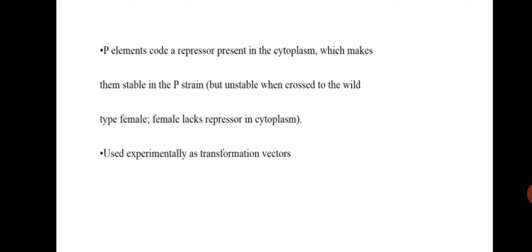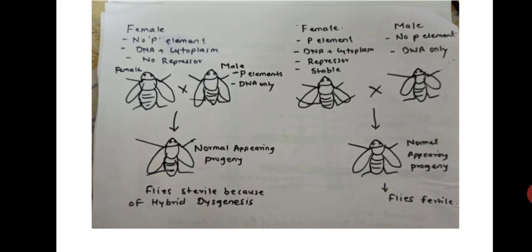P elements encode a repressor present in the cytoplasm, which makes them stable in P strain but unstable when crossed to a wild type female, as the female lacks repressor in the cytoplasm. P elements are used experimentally as transformation vectors.